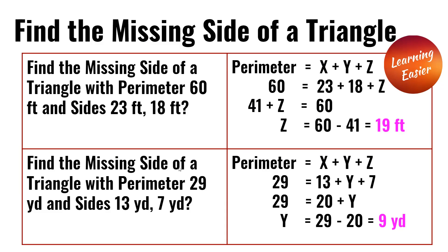Next, find the missing side of a triangle with a perimeter of 29 yards and sides 13 yards and 7 yards. 29 is equal to 13 plus y plus 7. 13 plus 7 is 20, so 29 is equal to 20 plus y. 29 minus 20 is 9 yards, and 9 yards is the side length of y.